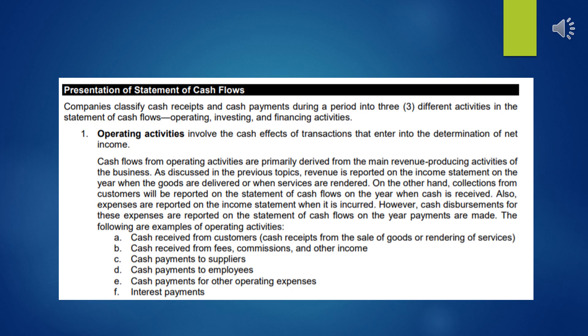Operating activities involve the cash effects of transactions that enter into the determination of net income — everything in the operating cycle. Cash flows from operating activities are primarily derived from the main revenue-producing activities of the business. Revenue is reported on the income statement when goods are delivered or services are rendered, while collections from customers are reported on the statement of cash flows when cash is received. Similarly, expenses are reported when incurred, but cash disbursements are reported when payments are made.